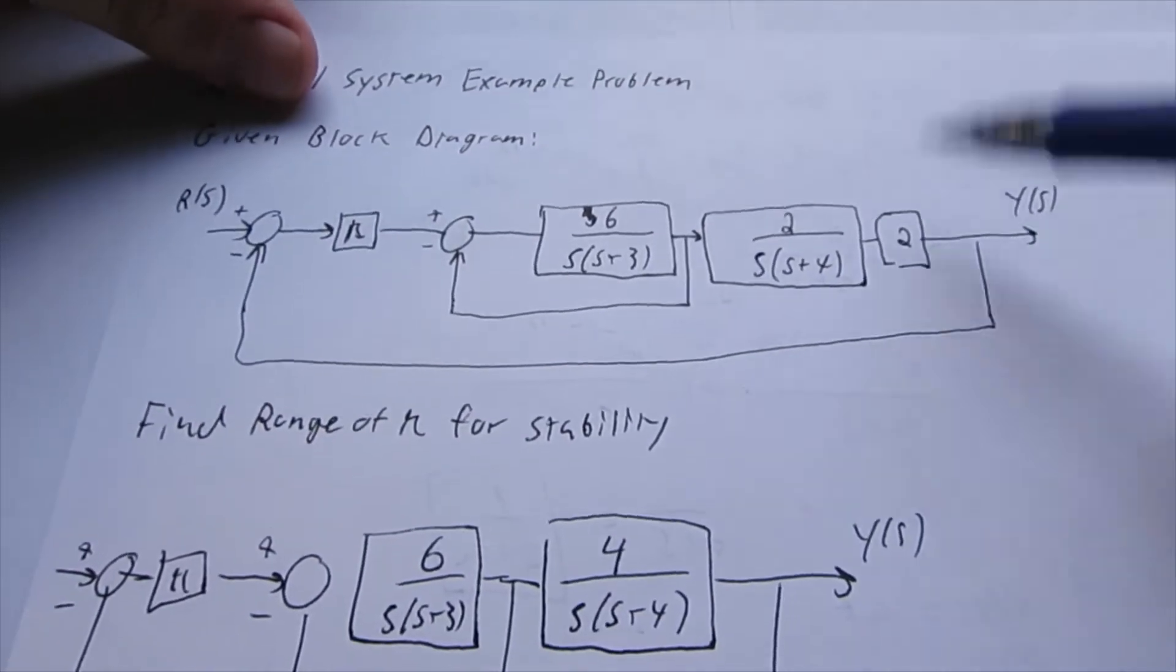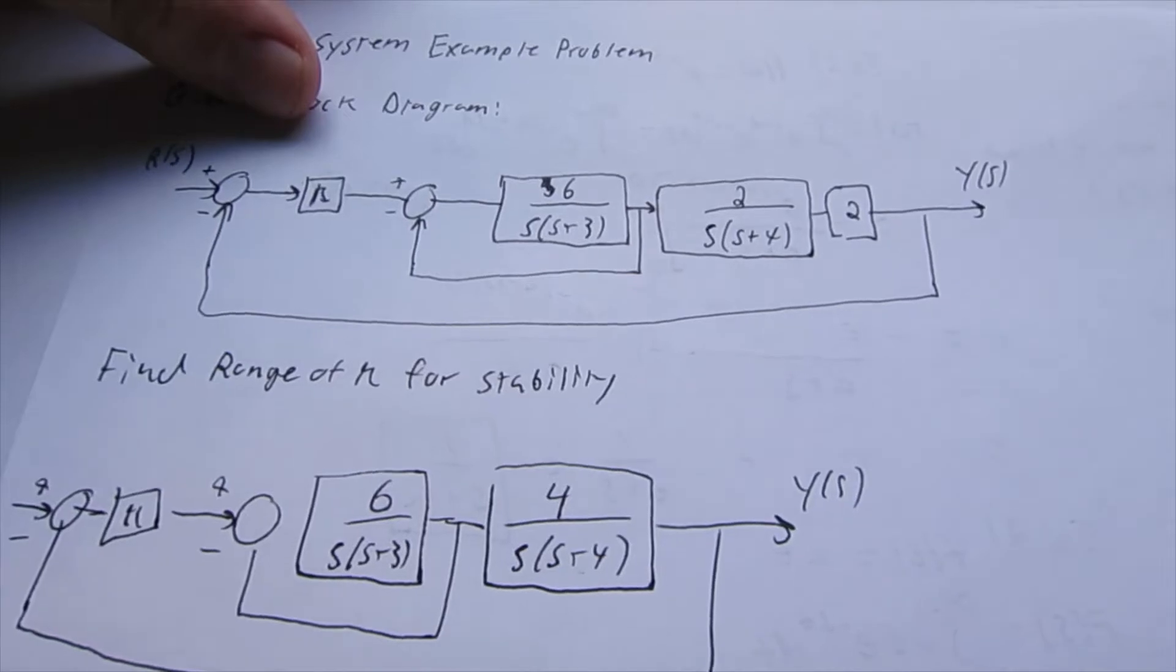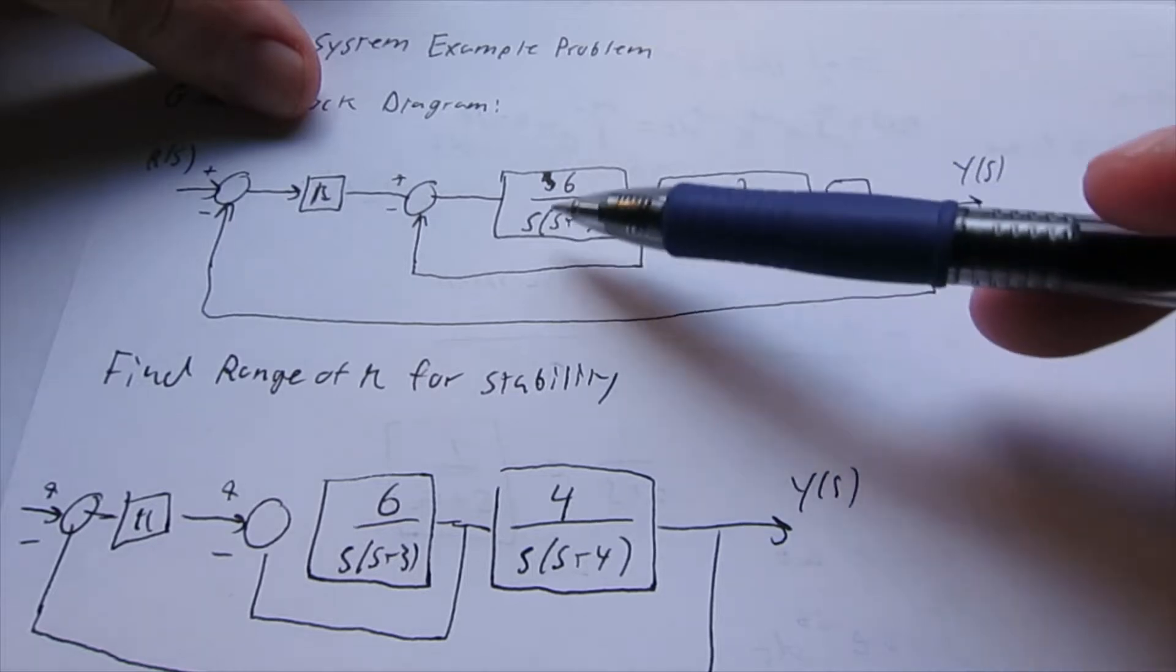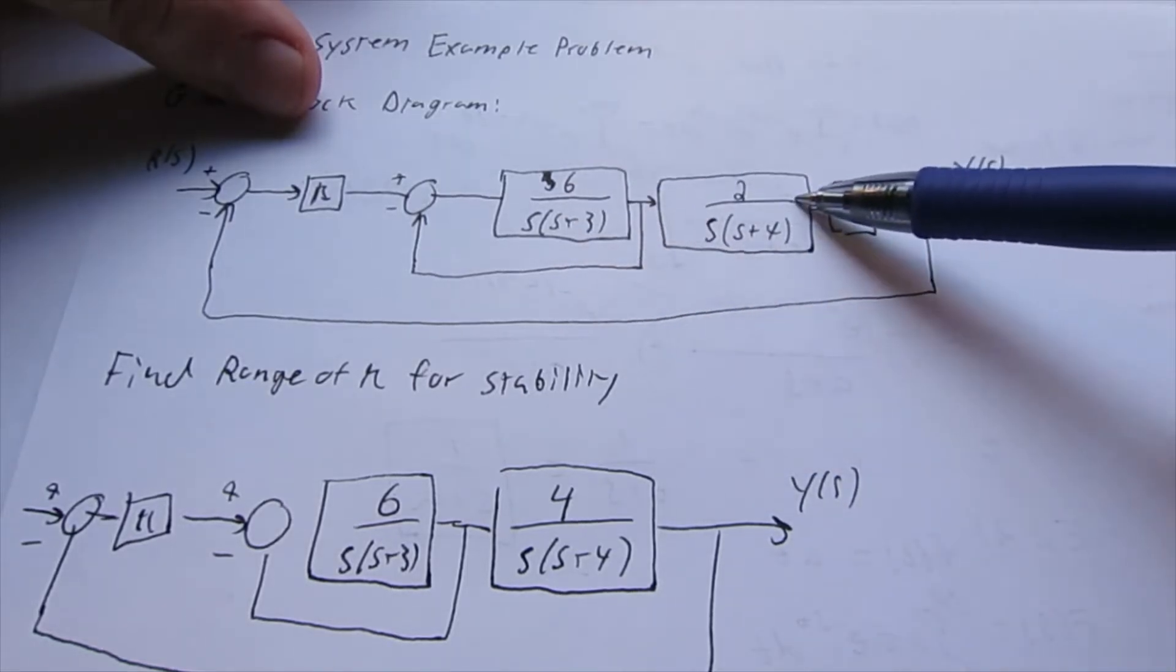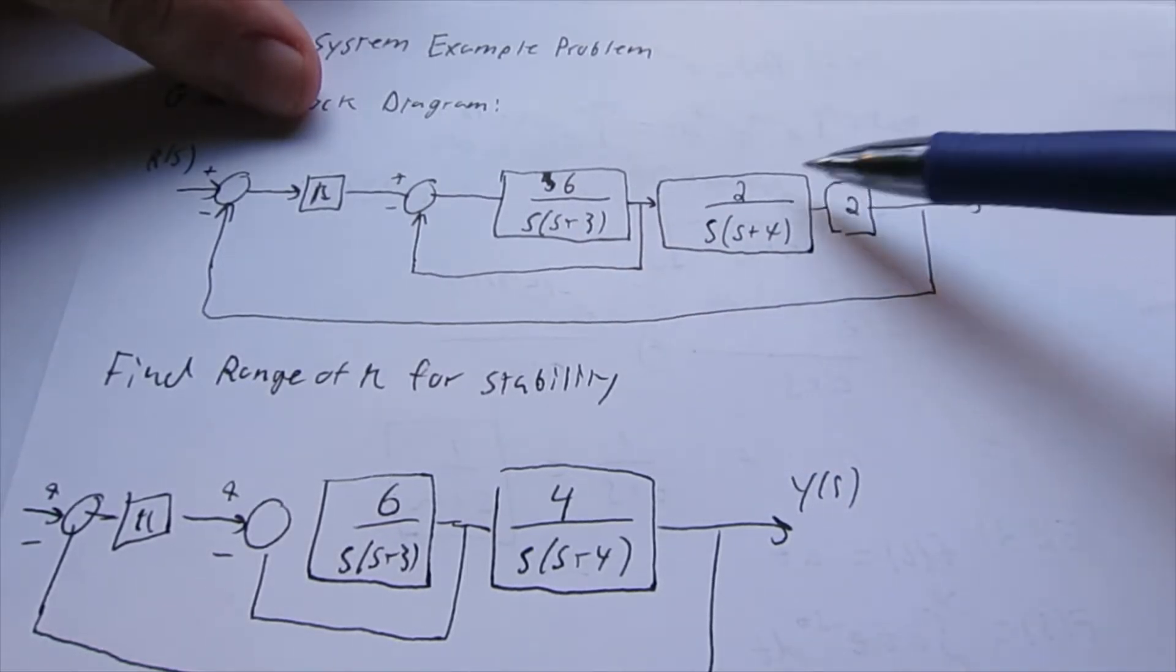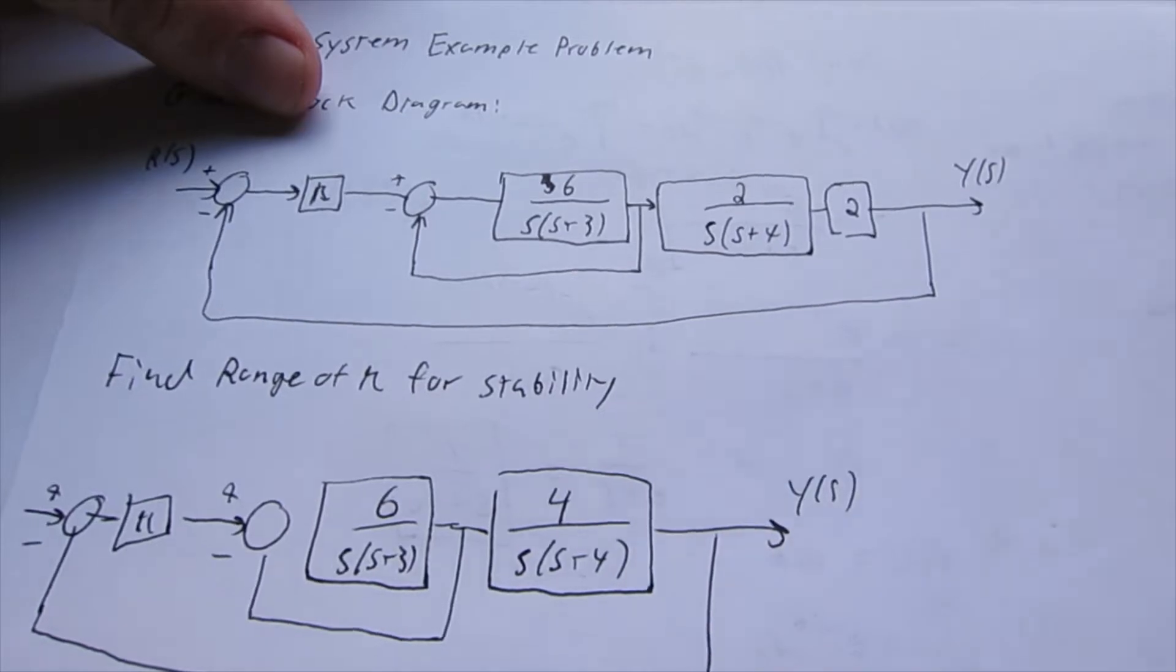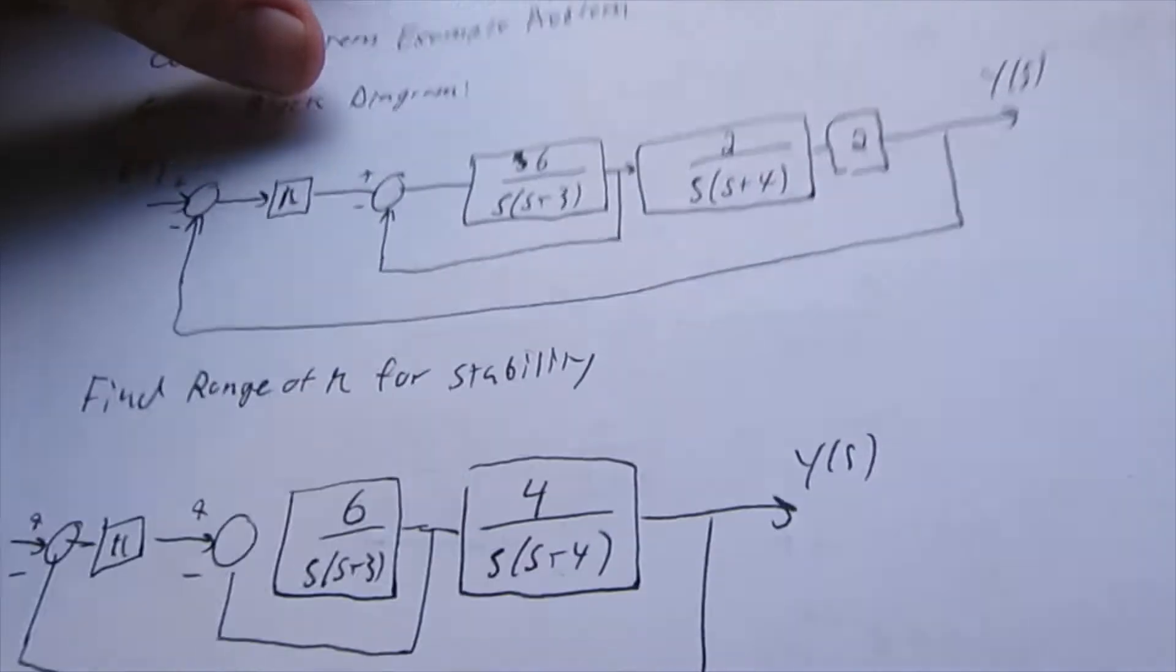So the first thing we can do here is, for block diagram reduction, if you have two blocks that are connected to each other with no loop, no feedback loop, we can just multiply them together. So 2 times 2 is 4, so we have 2 over S(S+4) times 2 is 4 over S(S+4).